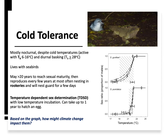Another characteristic is they exhibit temperature-dependent sex determination (TDSD), which we saw with turtles. They prefer to incubate their eggs at temperatures considerably lower than you'd see for a turtle or other reptile. They can take up to one year to hatch an egg because at lower temperatures metabolism is much slower. Slower temperatures, long time to sexual maturity, and they don't breed every year — especially when it takes a whole year to raise an egg.